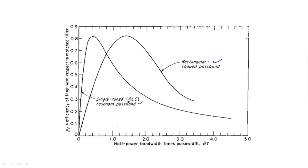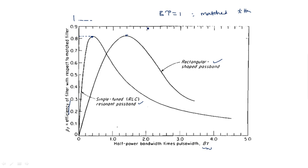Their bandwidth times pulse width product is approximately equal to 1 — somewhere around 1, not exactly 1. If we plot efficiency against bandwidth times tau, these two filters achieve efficiency above 0.8. When bandwidth times tau is exactly 1 it is a matched filter; otherwise these are non-matched filters with somewhat better efficiency.